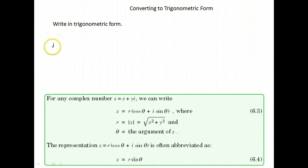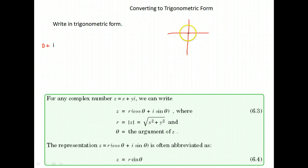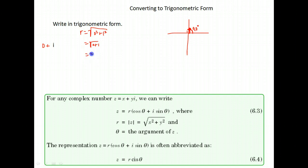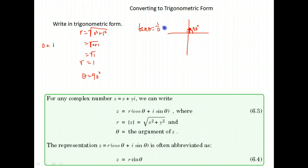Here's one last example — this time we just have the imaginary part, i, which is the same as 0 plus 1i. Graphing it: go right and left 0, up 1i, so we're on the positive imaginary axis. The angle is 90 degrees by observation, and r is a distance of 1. Using the formula: square root of 0 squared plus 1 squared equals 1. For theta, tangent equals 1 over 0, which is undefined — that occurs at 90 and 270 degrees. We want 90 degrees.